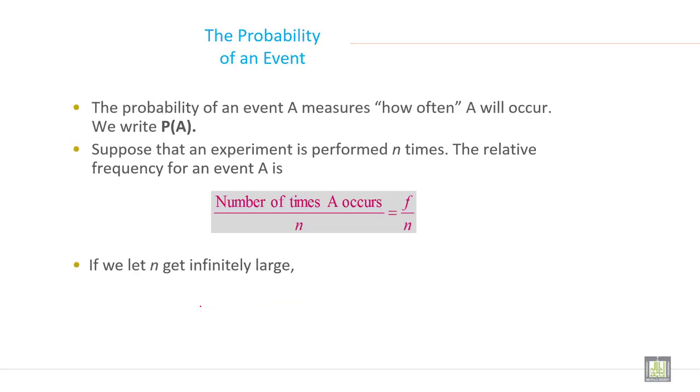Now probability of event. The probability of an event A measures how often A will occur. We write P(A). Suppose that an experiment is performed N times. The relative frequency for an event A is number of times A occurs divided by N.